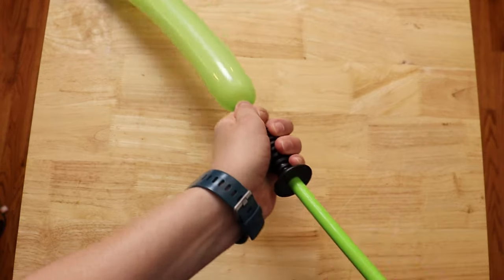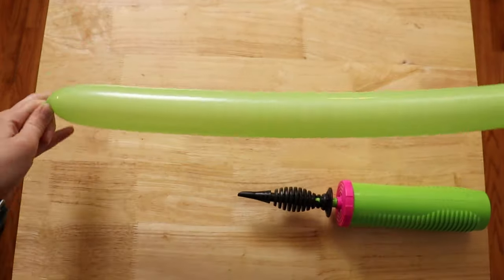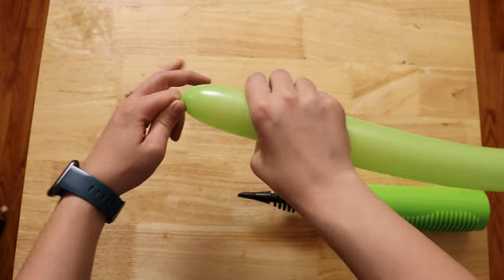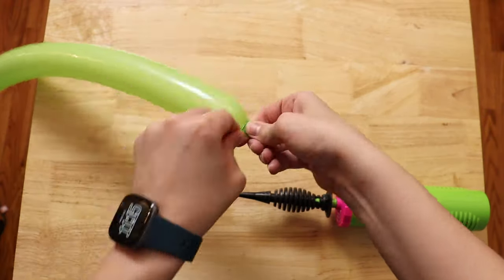So to start off, I'm going to make the stem of my rose using my lime 260 balloon, and I'm going to inflate that to eight pumps of air, which should look like this, with just an inch or two left uninflated on the end of the balloon. This balloon is pretty stiff, so I'm going to let a little bit of air out so it's nice and soft before tying it off.